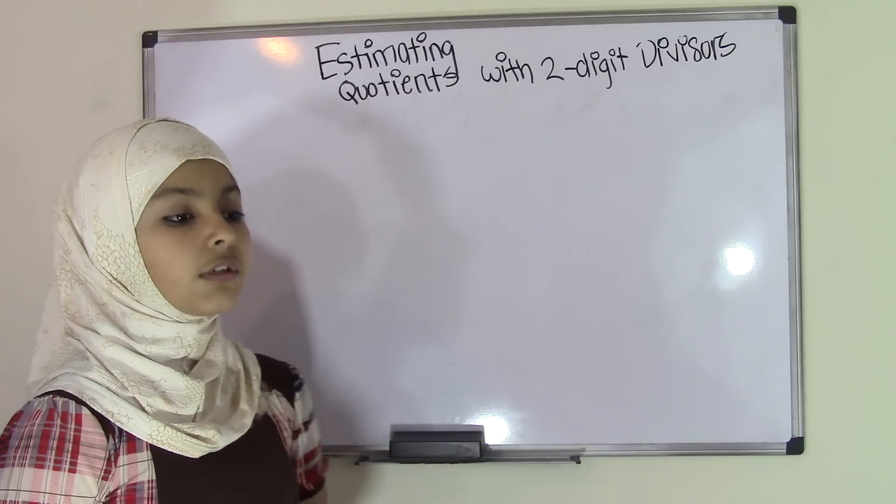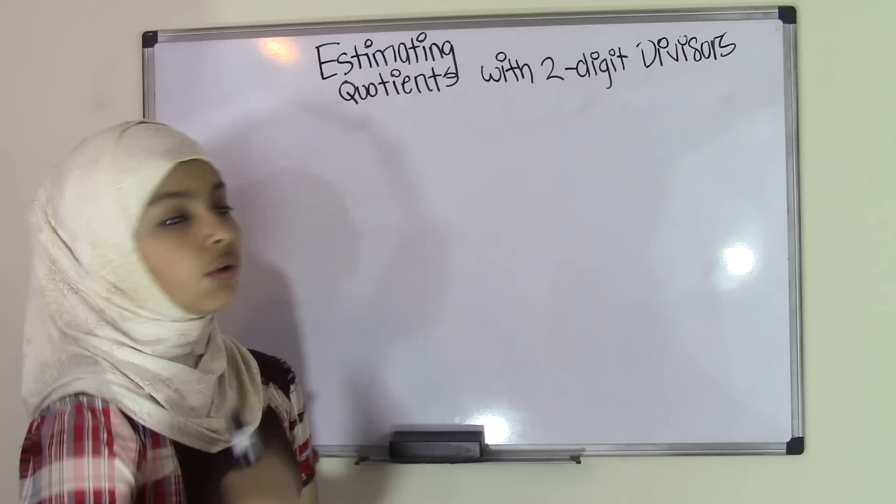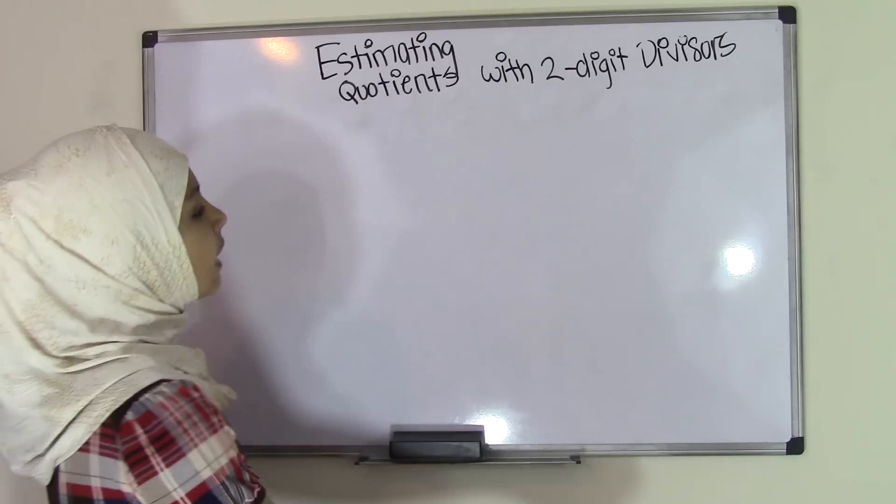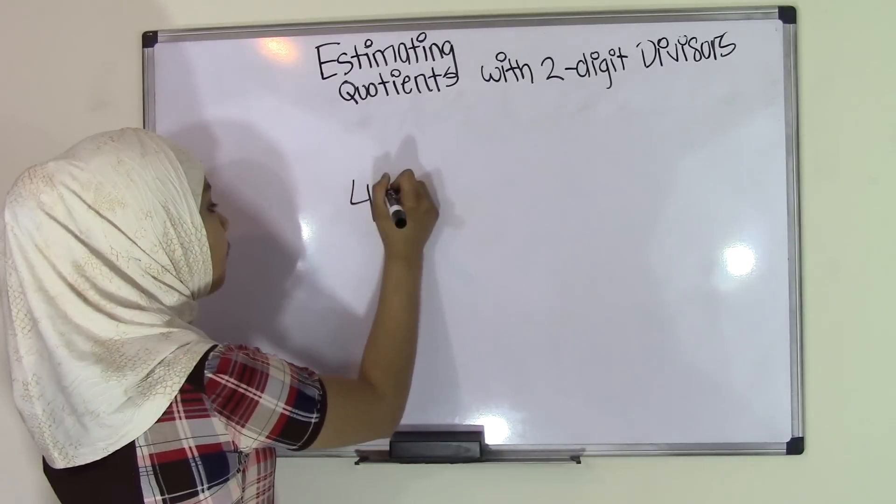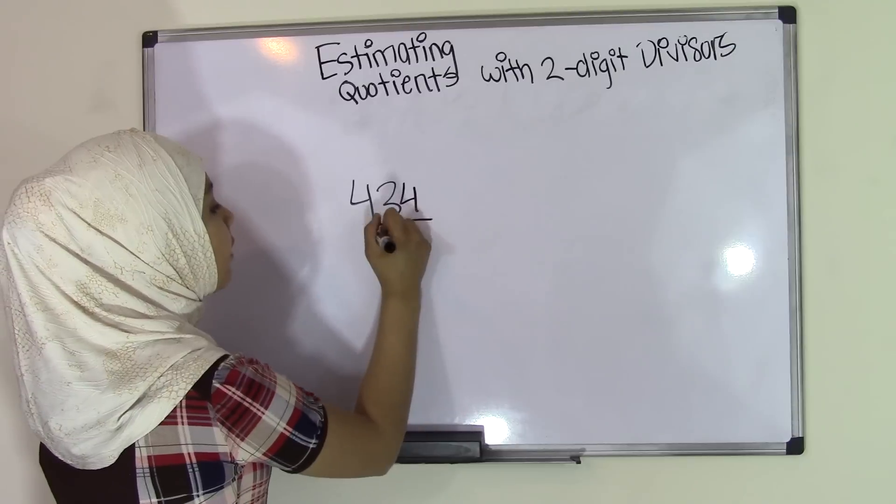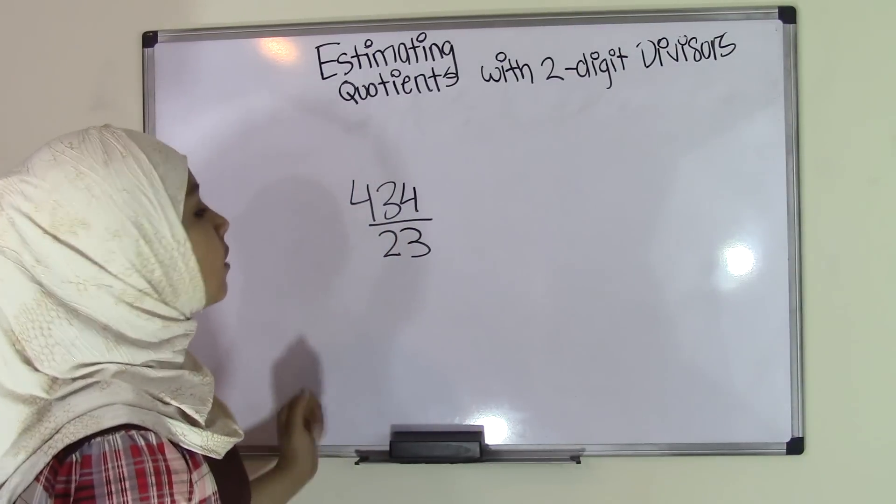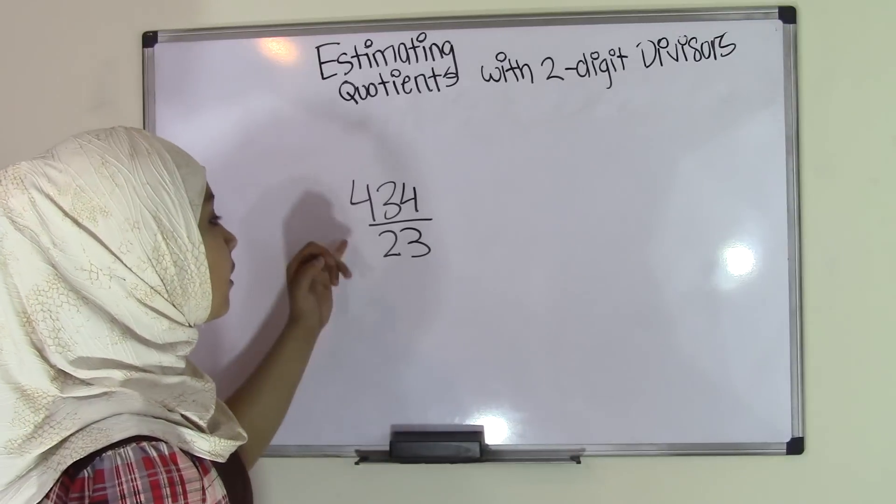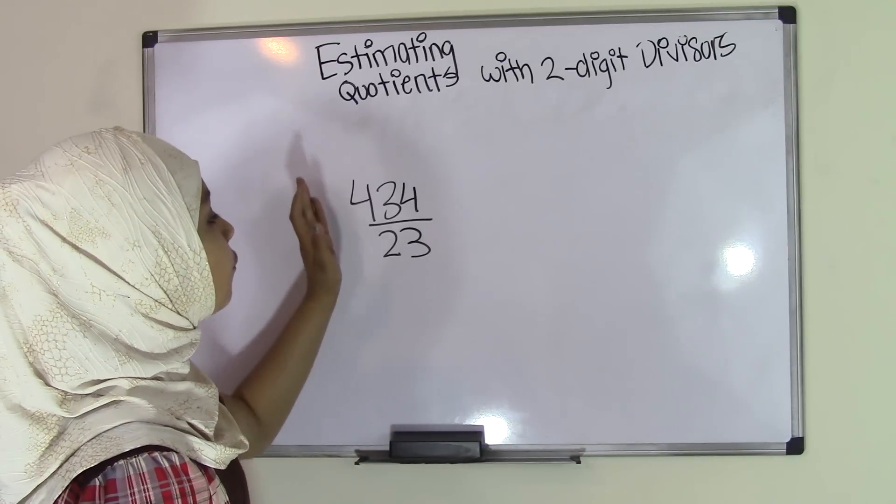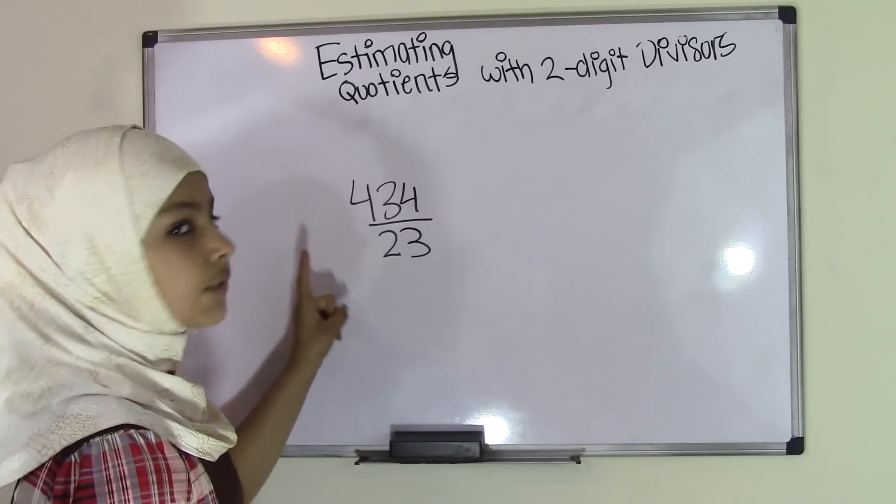So just to start off, we're going to start with some basic questions so that way we can learn it and then we'll move on into further problems. Let's say we have 434 divided by 23. Now we're going to estimate these quotients. The first thing we're going to take a look at are our dividend and divisor. We know 434 is our dividend, and 23 is our divisor.